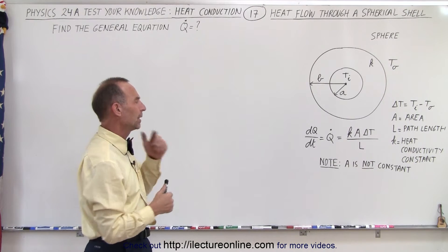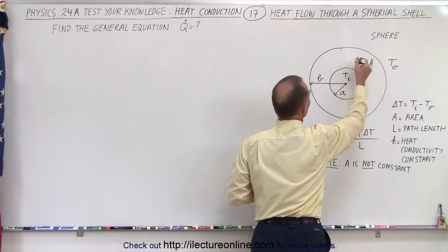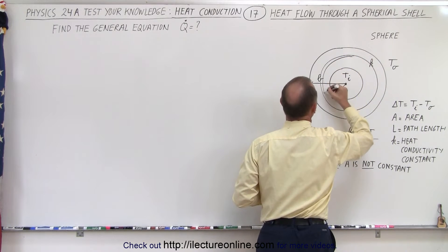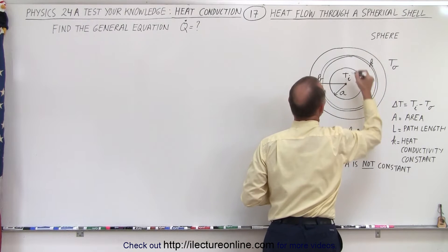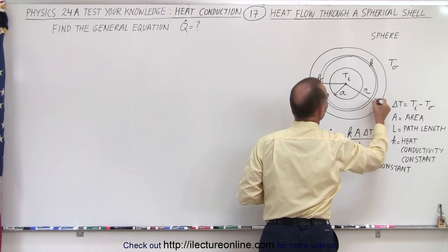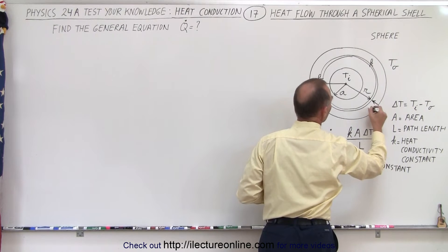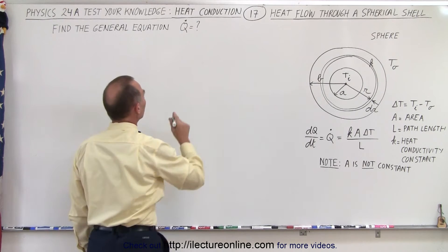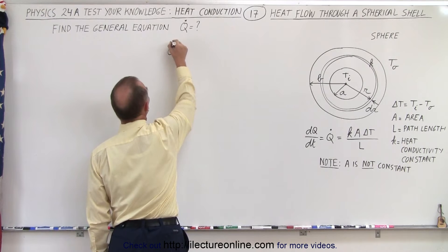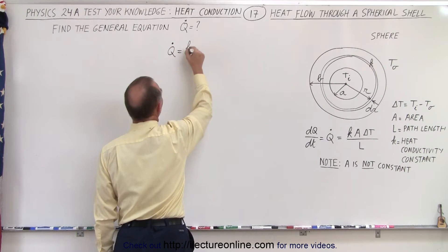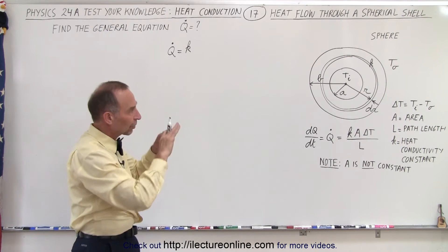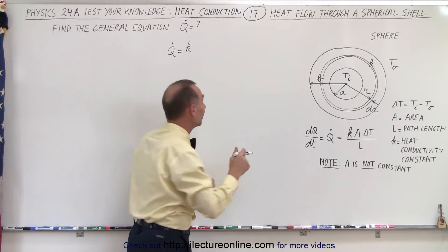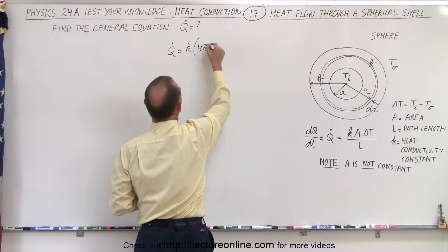So how do we do that? We're going to imagine a very thin shell inside the sphere — just a really thin shell. The distance to the shell, let's call that R, and the thickness of the shell, let's call it dr. We can set up an equation: the heat flow Q dot through the shell is equal to the constant K times the cross-sectional area. The cross-sectional area of the shell is the surface area of a sphere, which is 4π R squared.